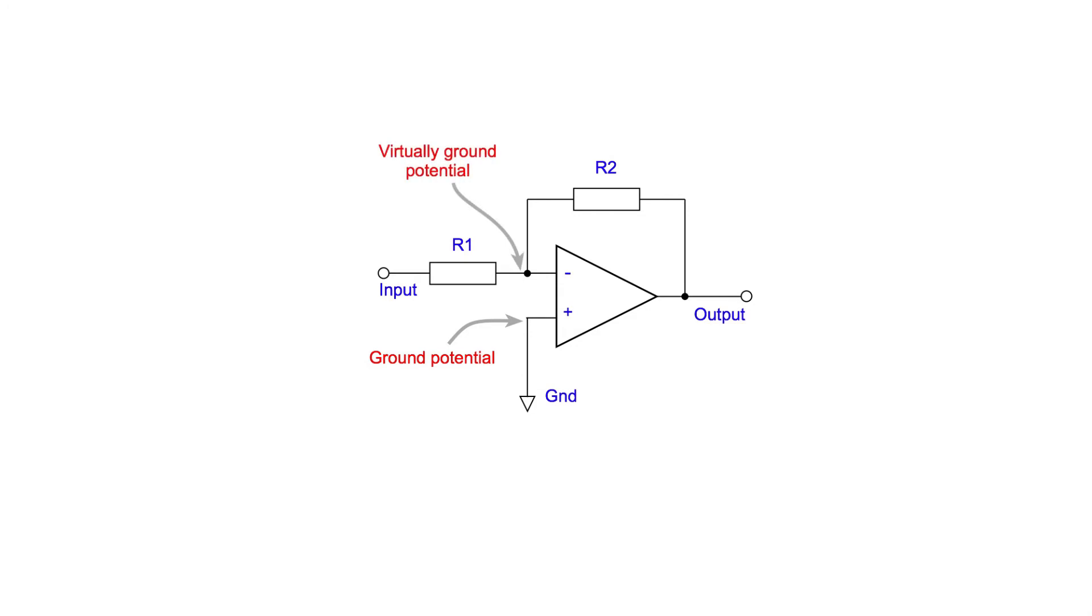As the non-inverting input is at ground potential, this means that the inverting input is virtually at ground potential as well. This means that we can add more input resistors to the inverting input, and they won't affect each other. Because the inverting input is at a virtual earth potential, this circuit is sometimes called a virtual earth mixer.